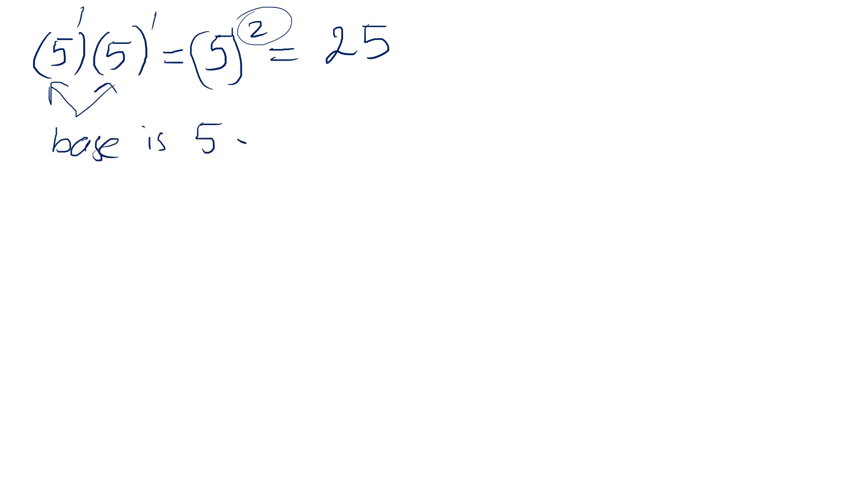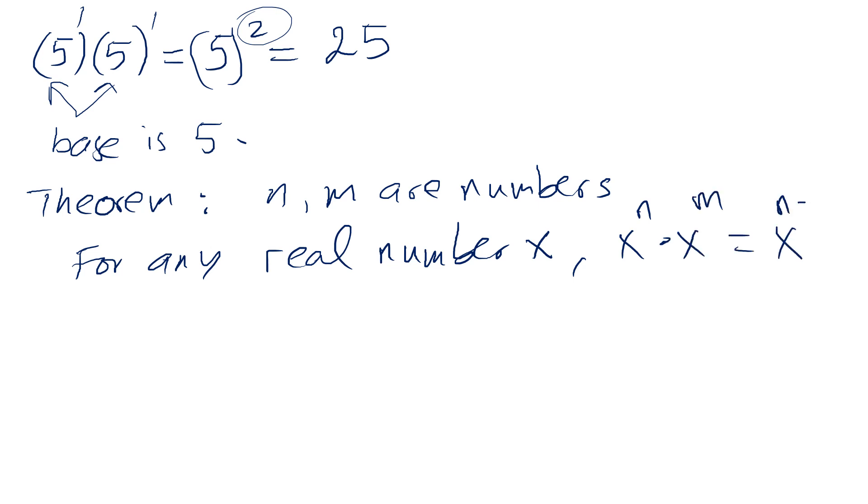The base is the same, five. So based on this, we have a theorem that states that if n and m are numbers, then for any real number x, the product will lead to the sum of the exponents. This happens under a topic called multiplying powers with the same base.